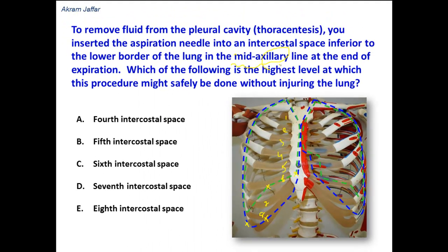Looking at the options: the 4th intercostal space would be dangerous. The 5th and 6th intercostal spaces are also dangerous as they might injure the lung. The 7th intercostal space lies between the 7th and 8th ribs — since the lung extends down to the level of the 8th rib, there is still a possibility of injuring the lung. The 8th intercostal space, below the 8th rib, is safe. The answer is the 8th intercostal space mid-axillary line: at this location we have no lung tissue, but we still have the costodiaphragmatic recess of the pleura, which extends down to the 10th rib, while the lung extends only to the 8th rib.